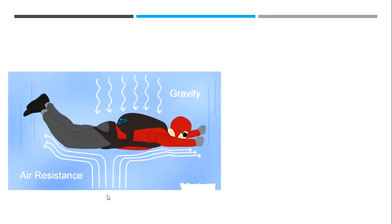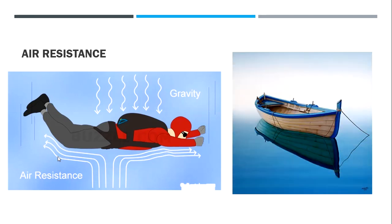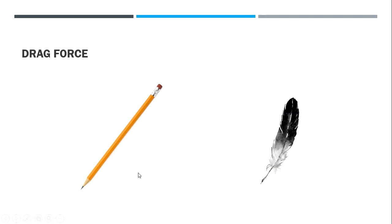Coming to air resistance — as an object moves through air, the air hits the object and slows it down. Air resistance increases with velocity: as you speed up, air resistance also increases. Unlike friction, which does not increase with velocity, air resistance does. Liquids also have resistance — that's why water can slow down a boat.